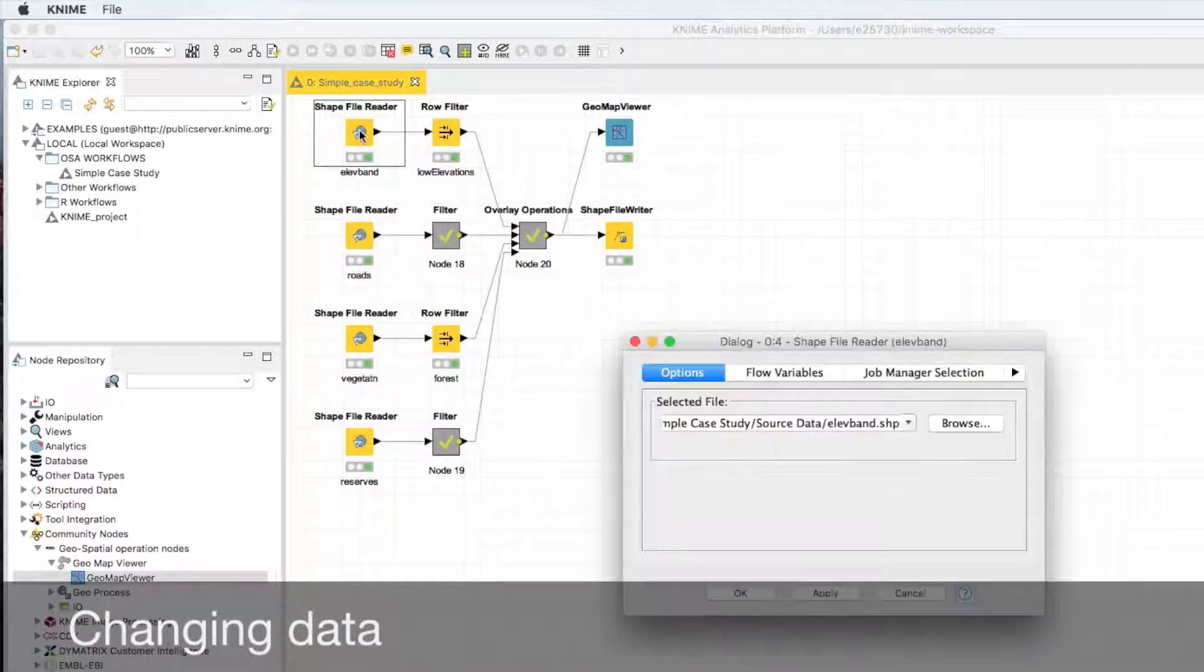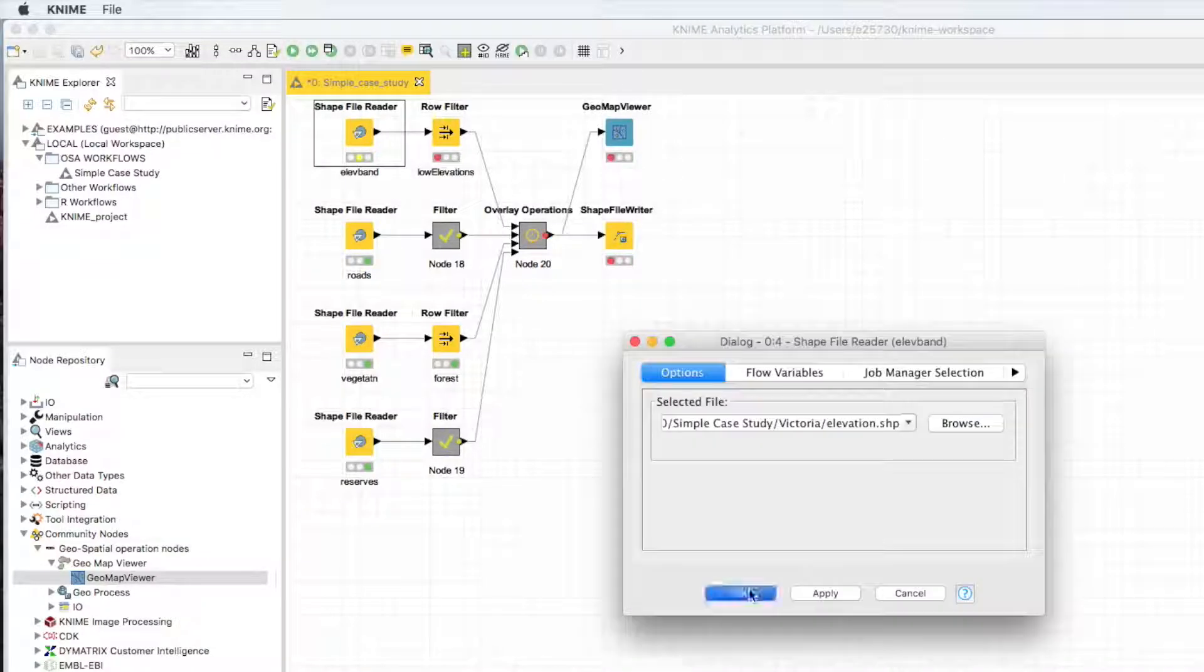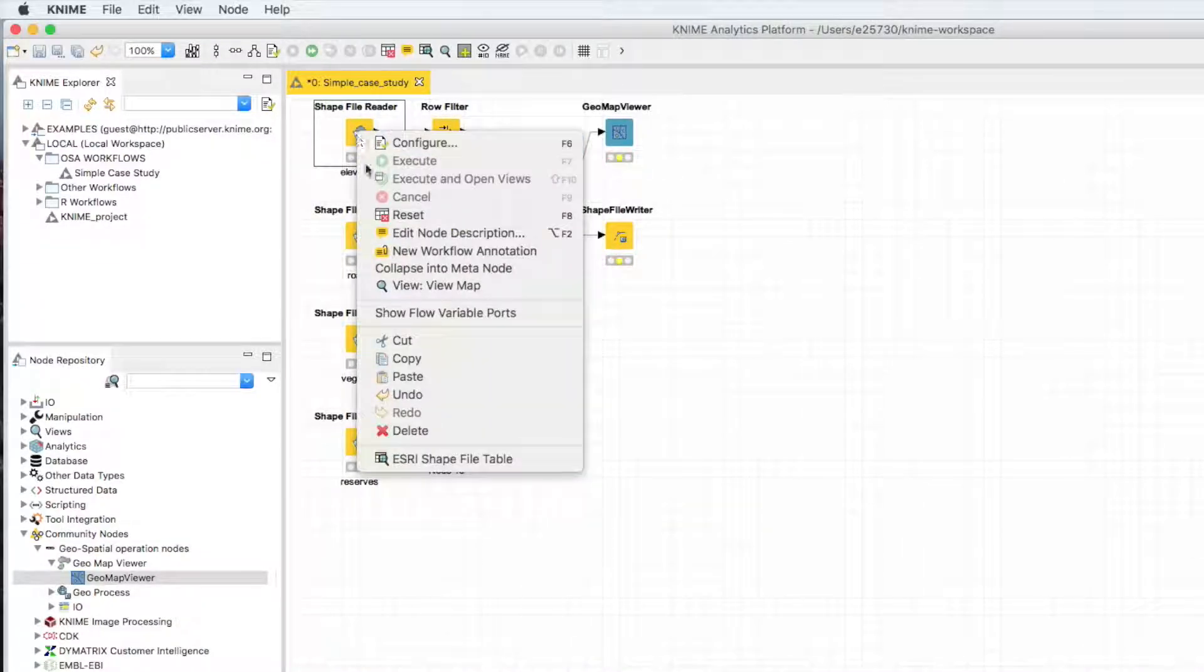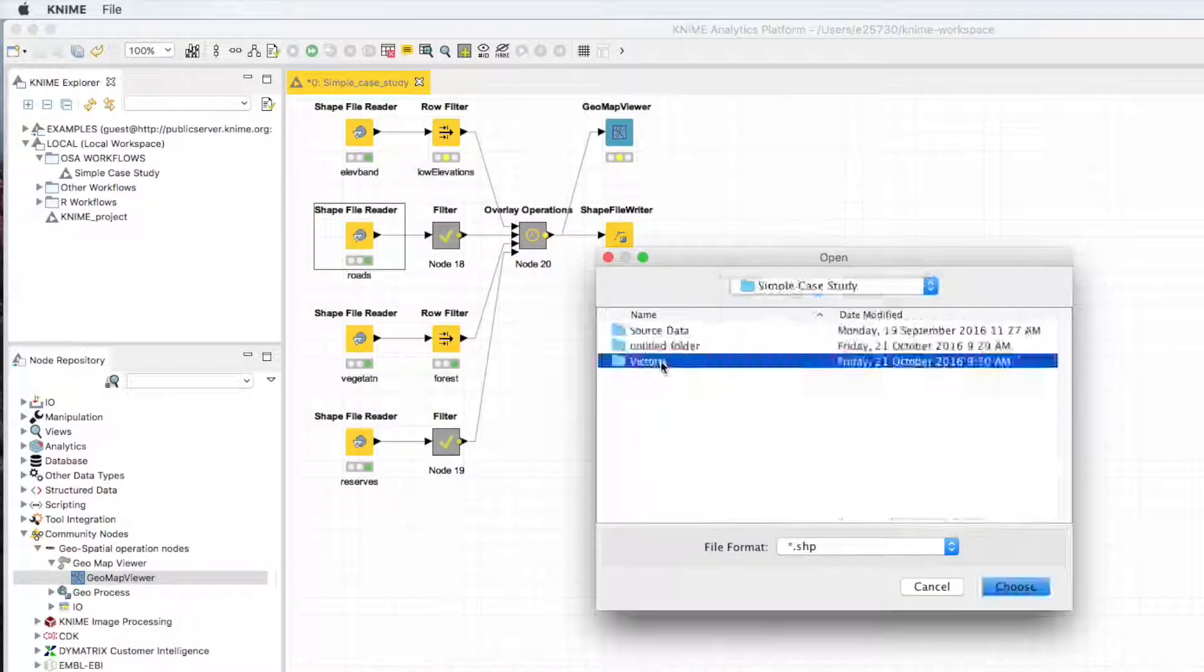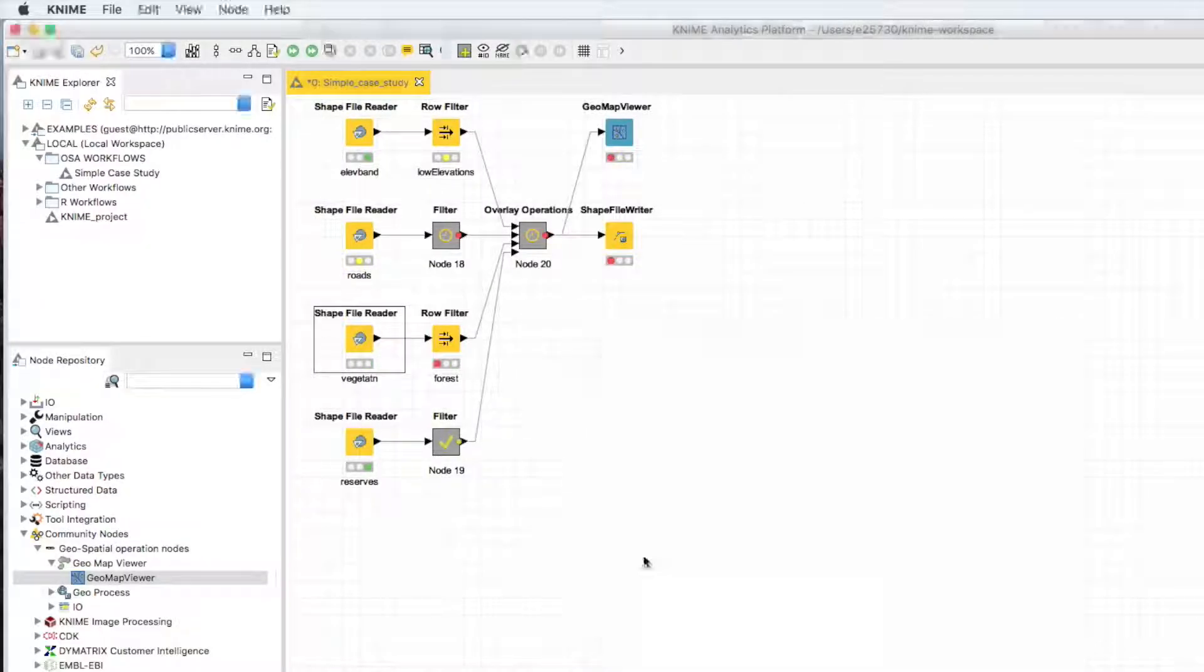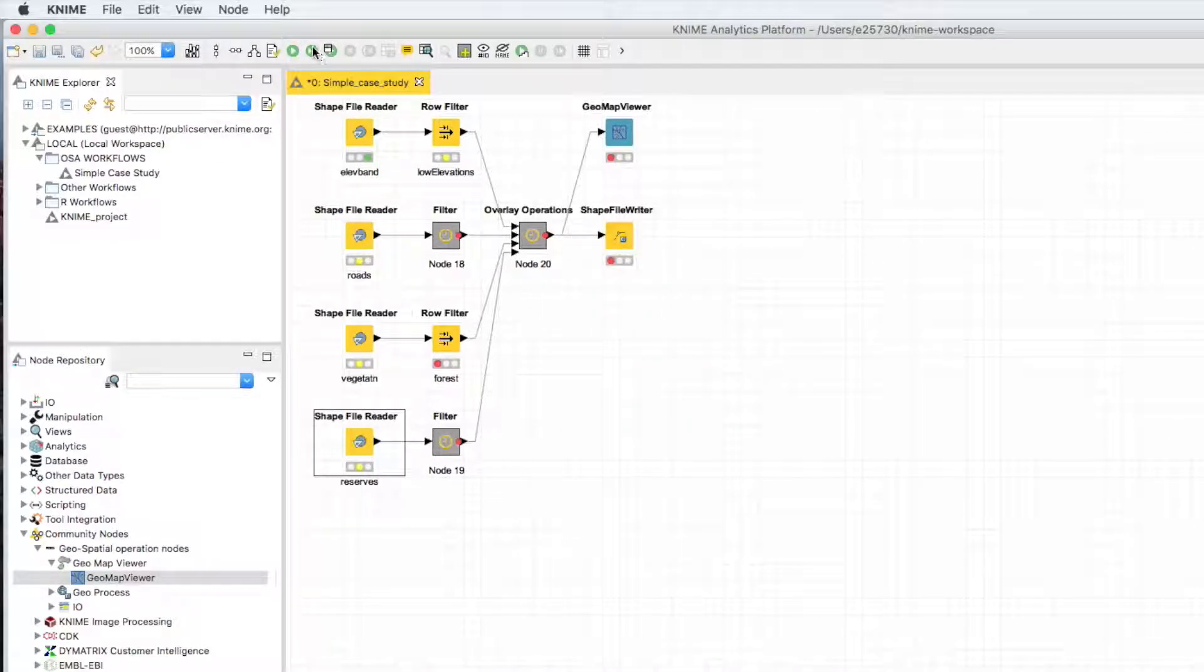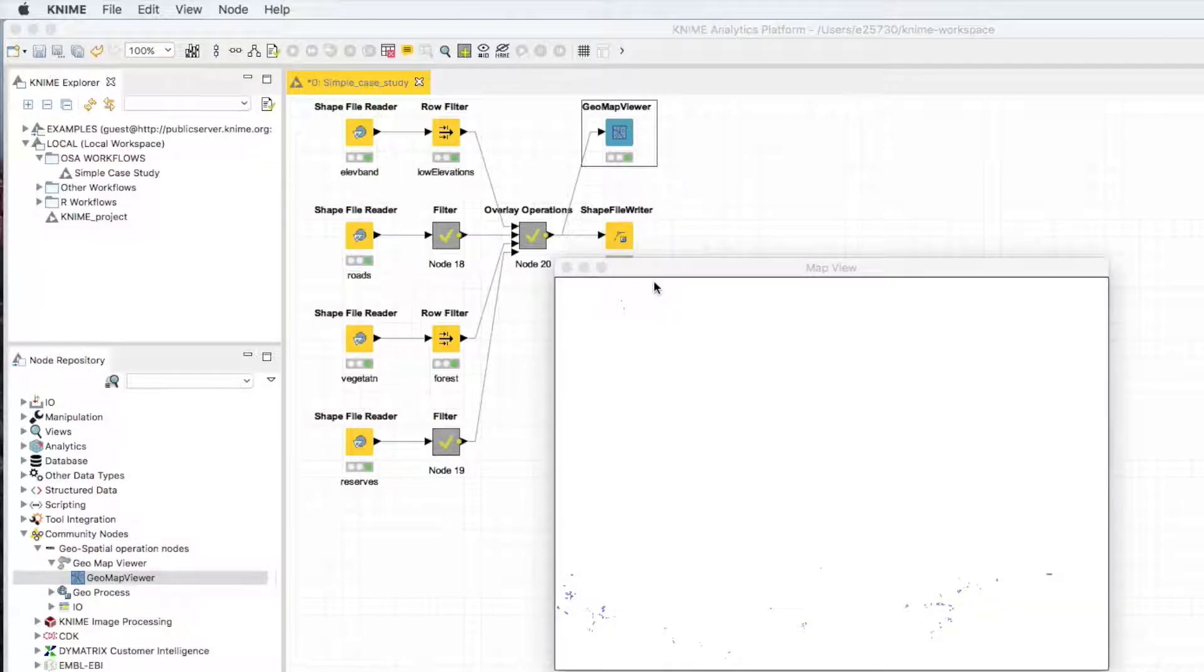Users can then quickly adapt each other's shared workflows. Here, the user is adapting the workflow by changing the shapefile data sources for Kangaroo Island with data for the whole of Victoria. The whole workflow can then simply be rerun with a different data set.